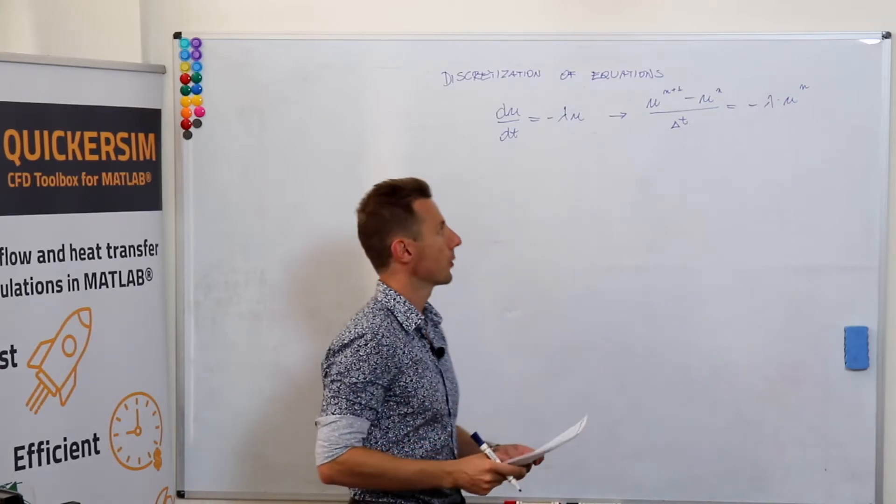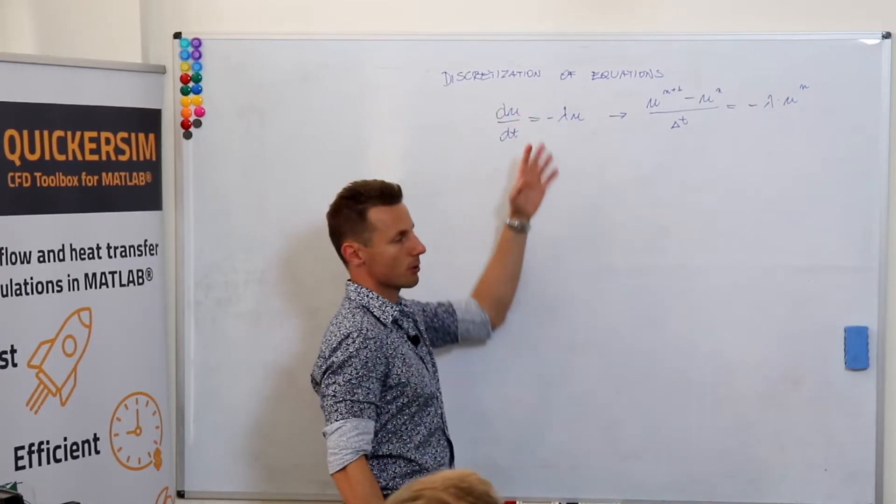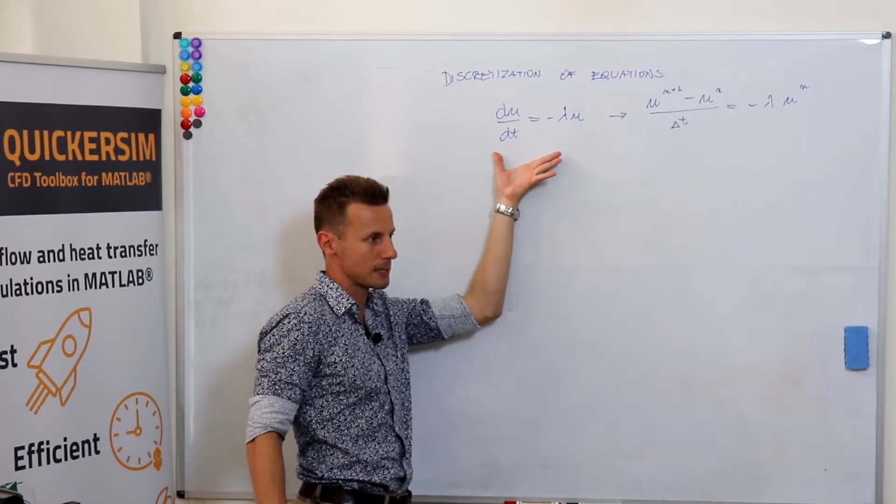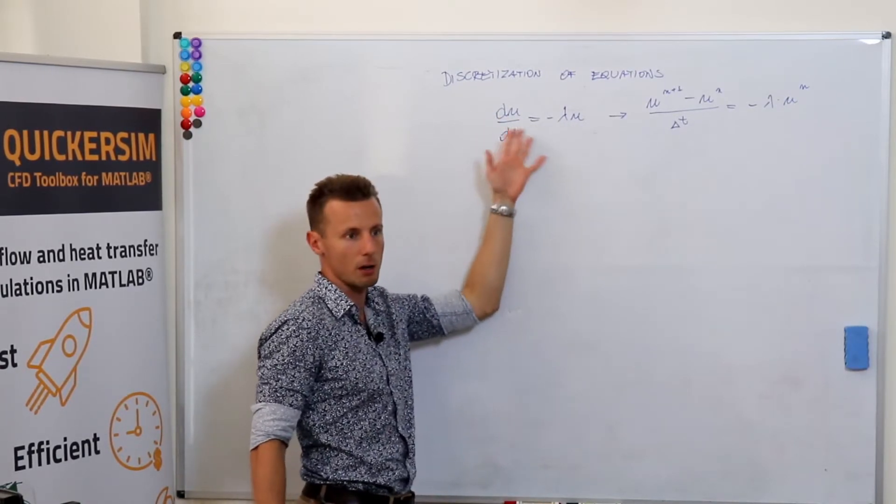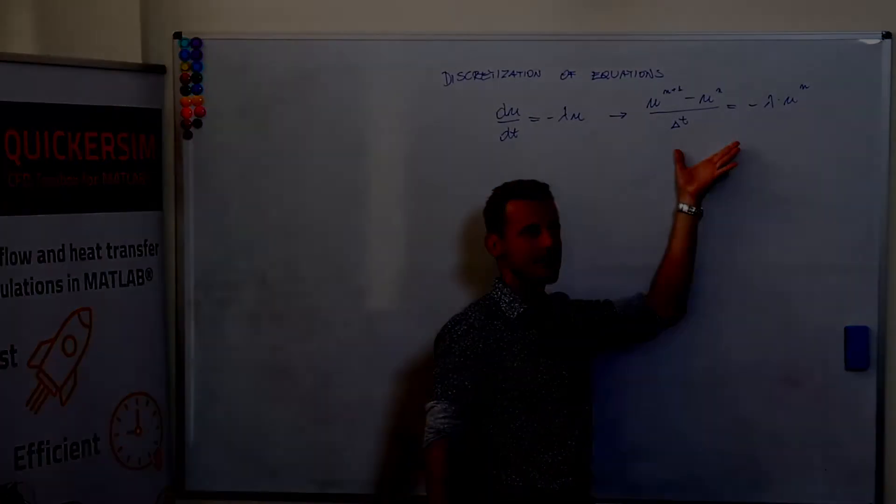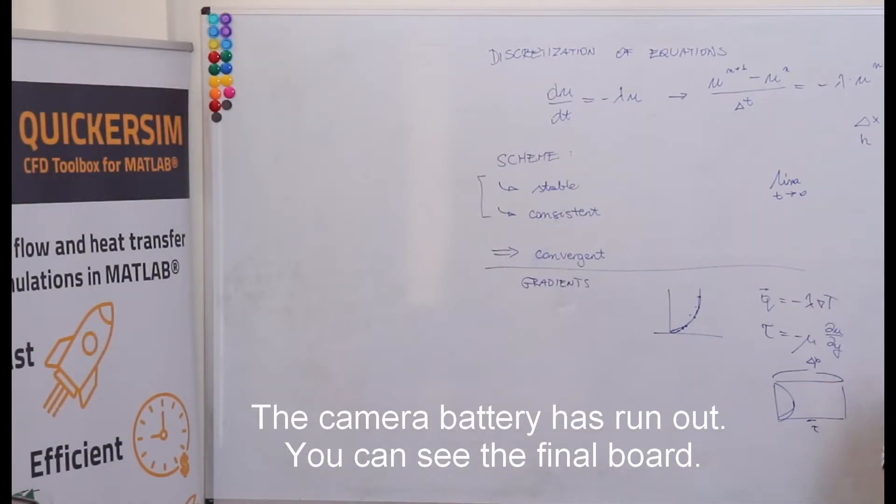Discretization of equations means moving from the infinite dimensional function space of all the functions that you could think of being the solutions of such a problem to a finite set of algebraic equations that can be solved by a computer. A computer cannot solve a differential equation. So if you want to solve anything on the computer, you need to end up with a finite set of algebraic equations, not differential equations. And that's what we call discretization of equations.